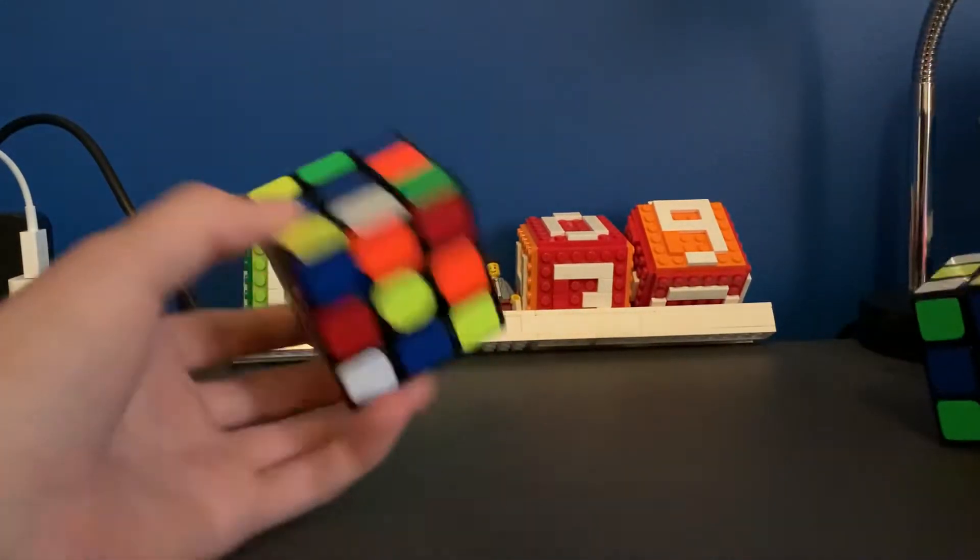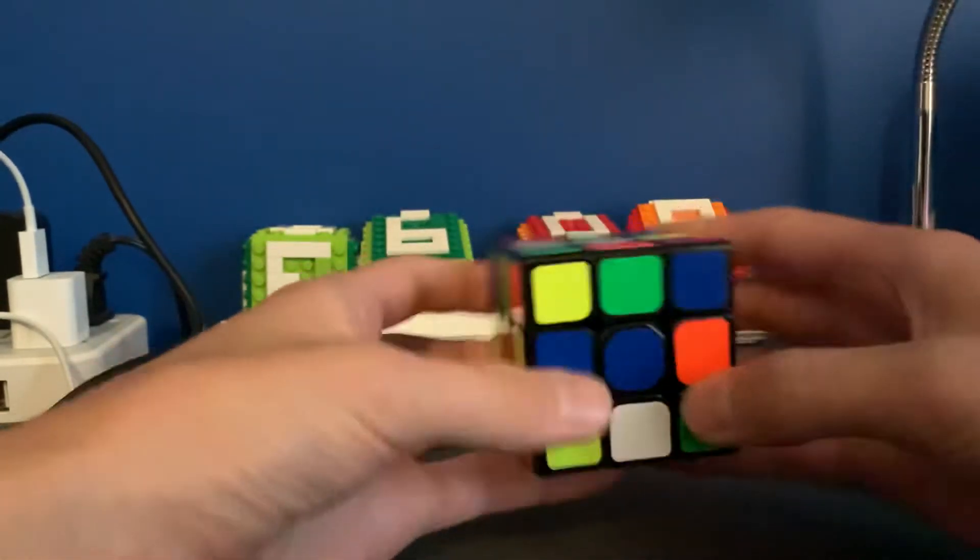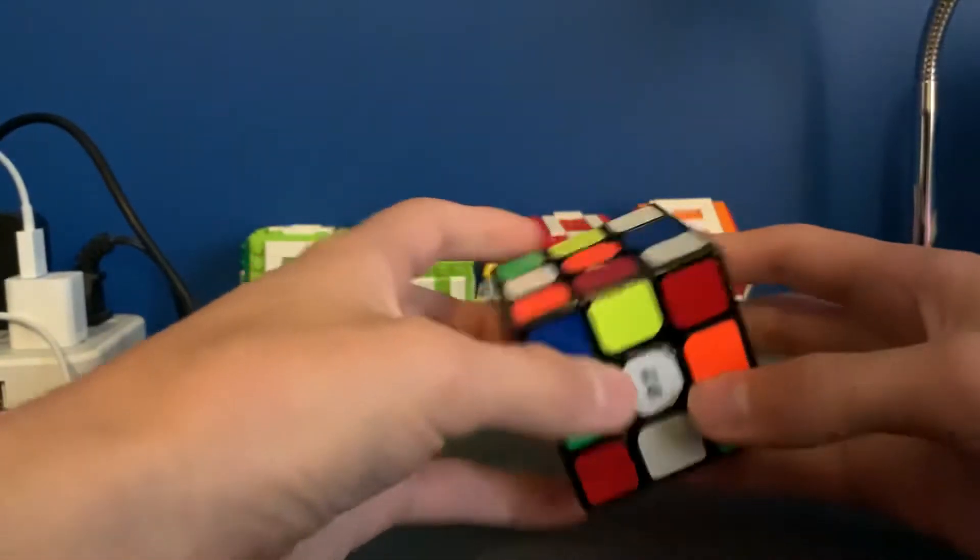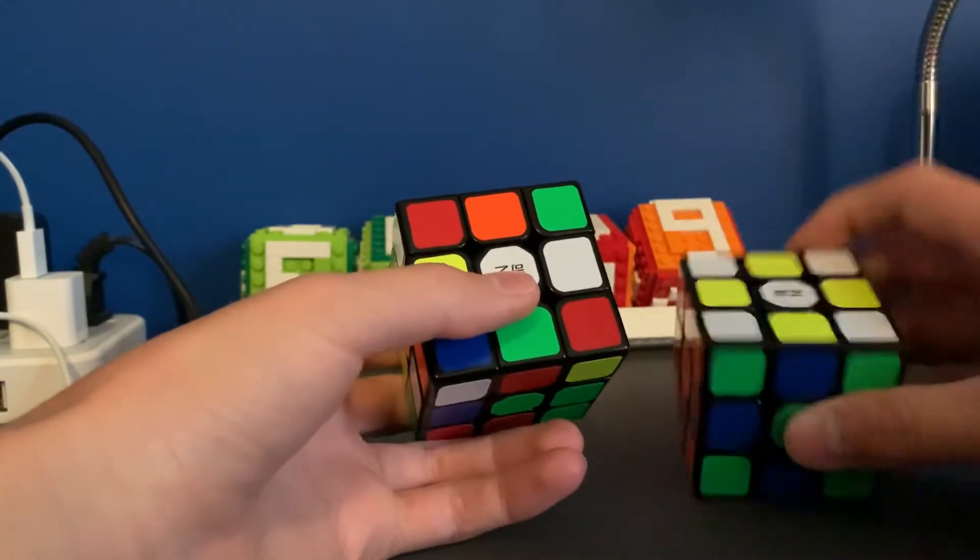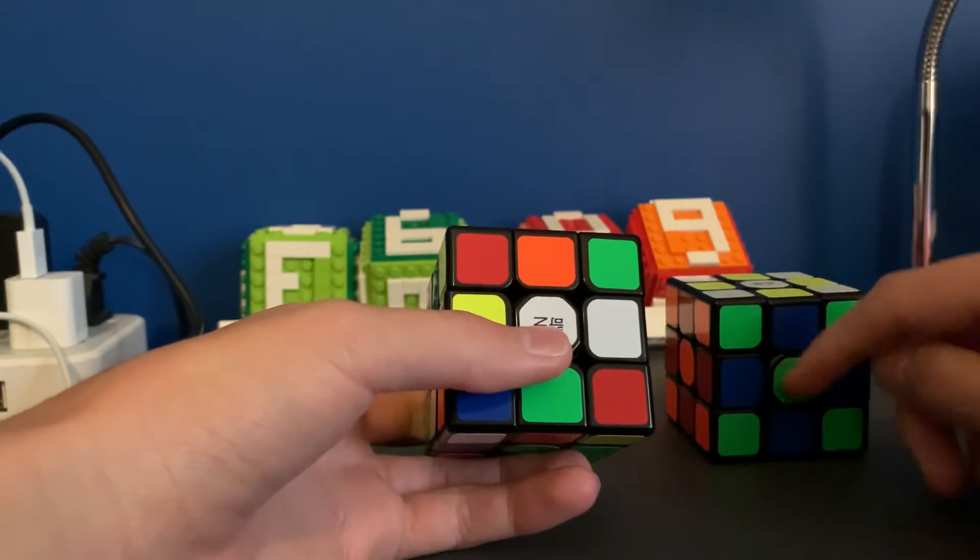So this isn't a tutorial, but this is just a challenge. If you ever wanted to try it yourself, you can do it now if you'd like. So I'm going to start on the white side, and it looks like I have to get all the white edges into their spots, and match it with their opposite colors of their centers.